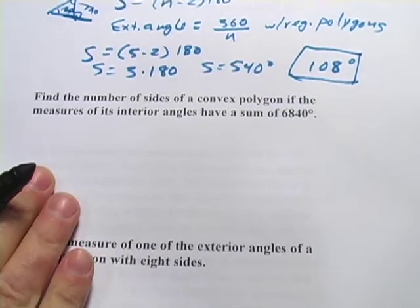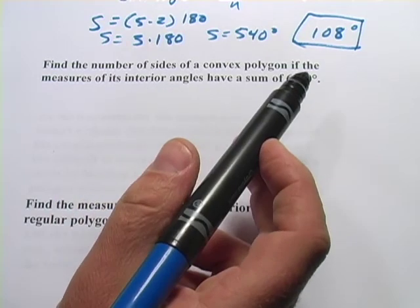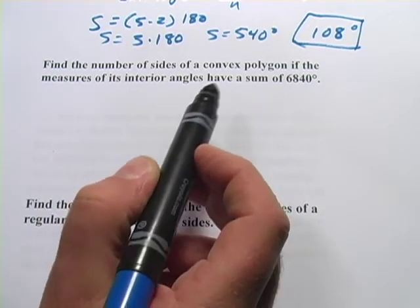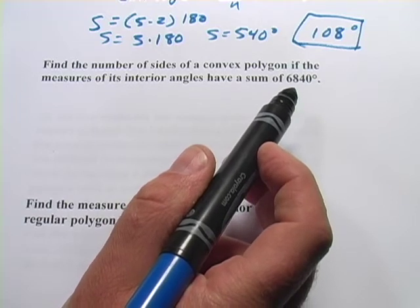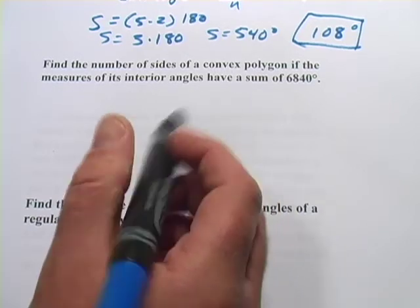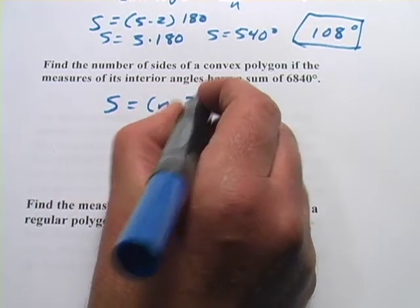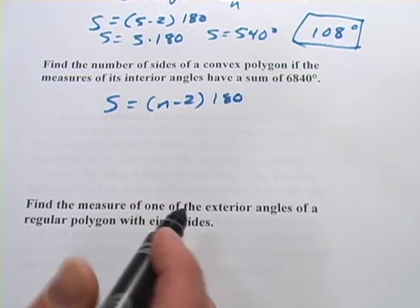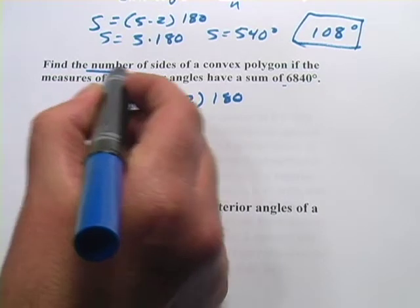All right. Let's look at the next one. This one says, find the number of sides of a convex polygon if the measures of its interior angles have a sum of 6840. This might look a little different than problems we've done so far, but it's really not much harder. We're still going to use that same formula, the sum equals the number of sides minus two times 180. But we already have the sum, and what we're looking for is the number of sides. So, we'll solve this for n.